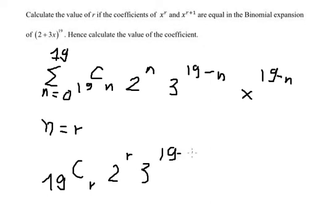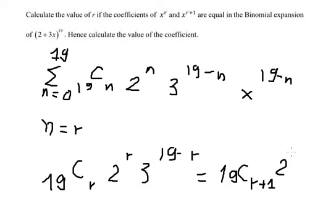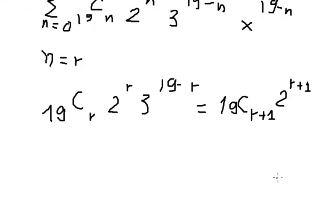We set this equal to the term for r plus 1: we have 19C(r+1), multiplied by 2 to the power of r plus 1, multiplied by 3 to the power of 19 minus r minus 1.